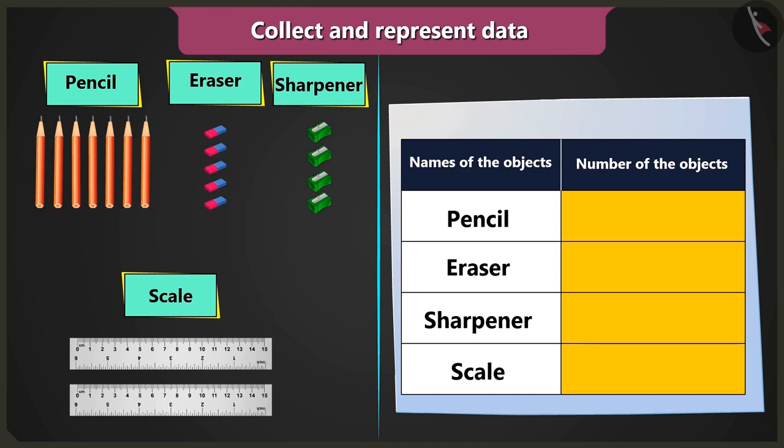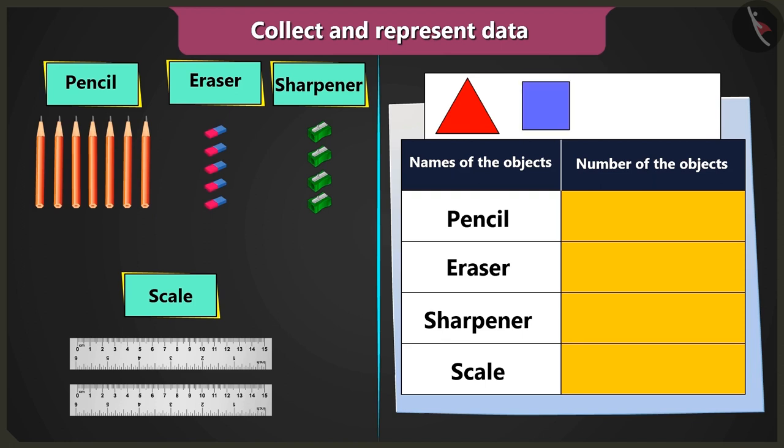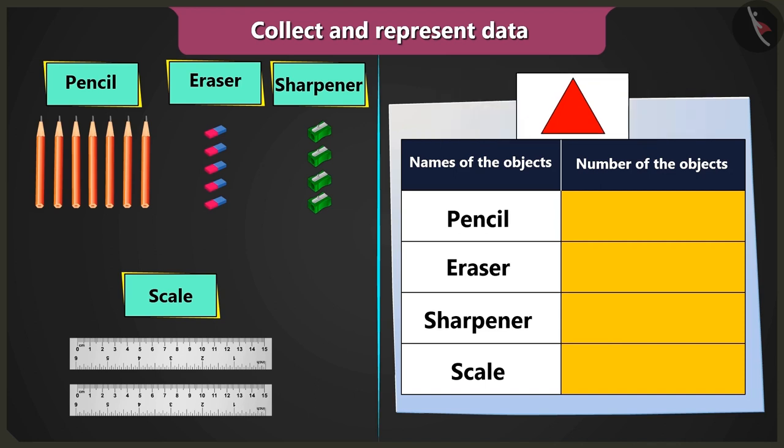And now, now in the column count of objects, you have to draw as many triangles, squares, or circles as the number of objects. So, we will draw triangles to fill the table. Okay.